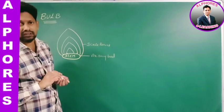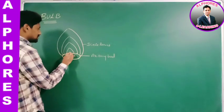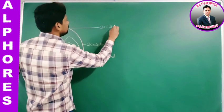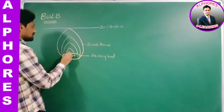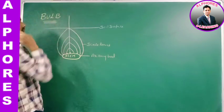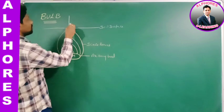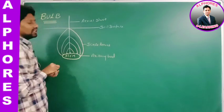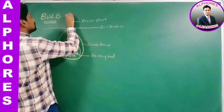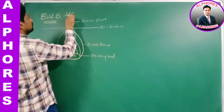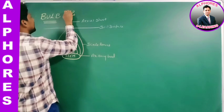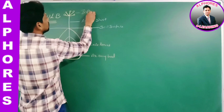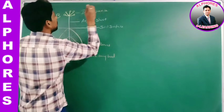This is a terminal bud. This is the soil surface. The terminal bud develops into an aerial shoot. This aerial shoot bears a group of flowers. Can we call this group of flowers an inflorescence? Yes, inflorescence.